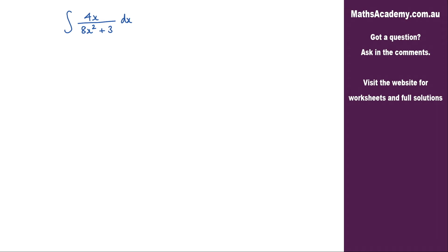So the first thing I'm going to do is to say let u equal 8x squared plus 3, and therefore du by dx is equal to 16x. And now I can rearrange this to find what dx is. So dx is equal to du over 16x.